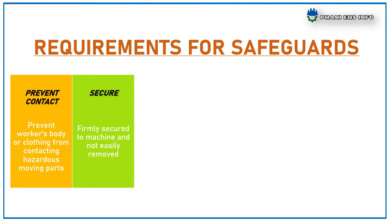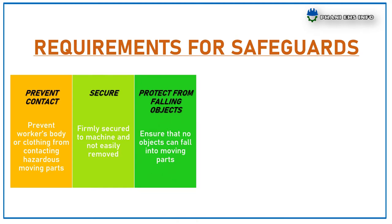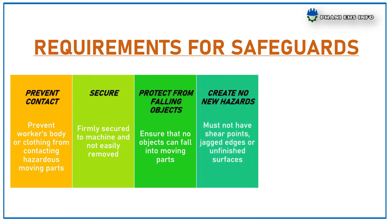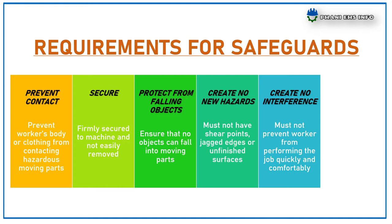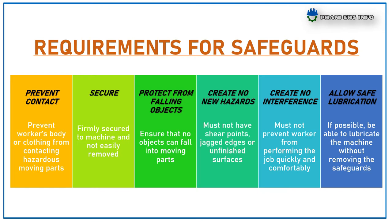Second requirement: be firmly secured to the machine and not easily removed. Third: protect from falling objects — ensure that no objects can fall into moving parts. Fourth: create no new hazards — must not have shear points, jagged edges, or unfinished surfaces. Fifth: create no interference — must not prevent workers from performing the job quickly and comfortably. Lastly: allow safe lubrication — if possible, be able to lubricate the machine without removing the safeguards.